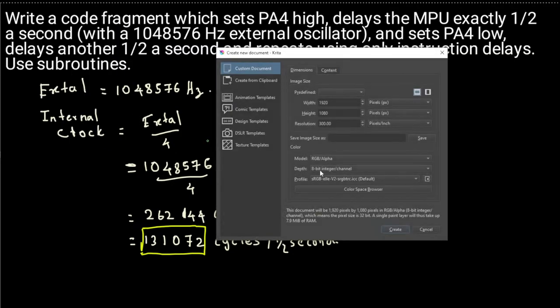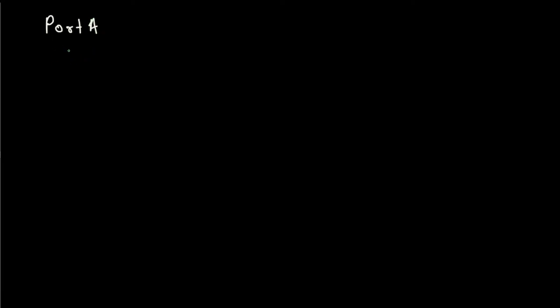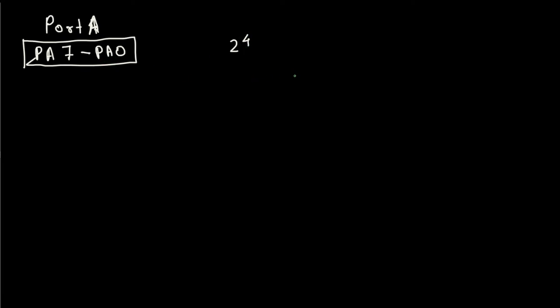We have to create a code, so let's write it. To write the code we need to know that it mentions setting PA4 high and PA4 low. Port A has a PA range of seven to zero. If it's PA4, that's 2 to the power of four, which is 16, and we have to load that value. Let's use a different color to write the code — start.